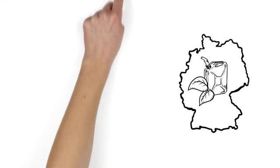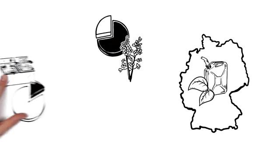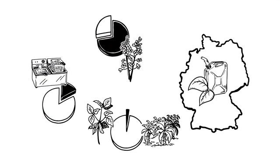Biodiesel in Germany is primarily made of rapeseed oil, but also from used cooking oil, palm and soybean oil.